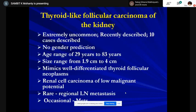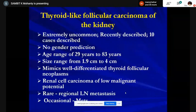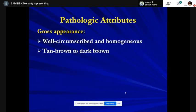The diagnosis was thyroid-like follicular carcinoma of the kidney. This is an extremely uncommon entity. There is also a variant with papillary-like nuclear features. There is no gender predilection, wide age range, can be small or large — two cases reported at seven and nine centimeters. They look like well-differentiated follicle-derived thyroid follicular neoplasms. Only a couple of cases have had regional metastases; occasional ones have distant metastasis.